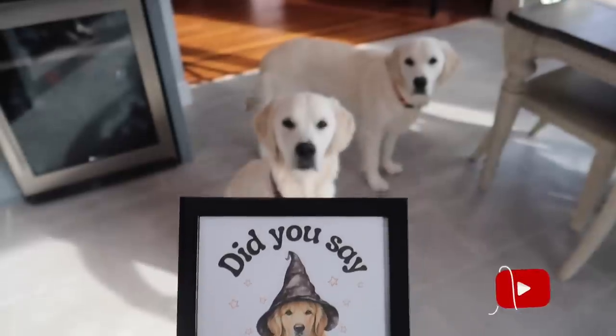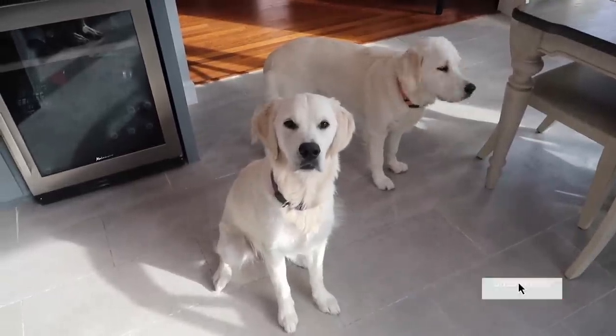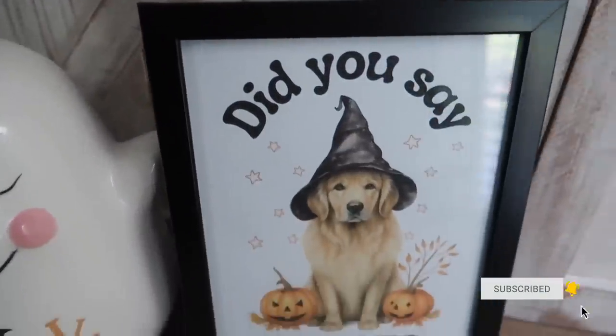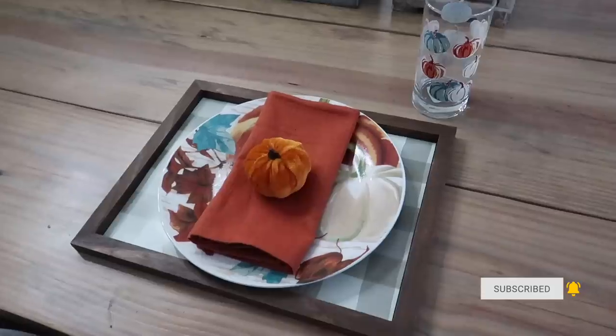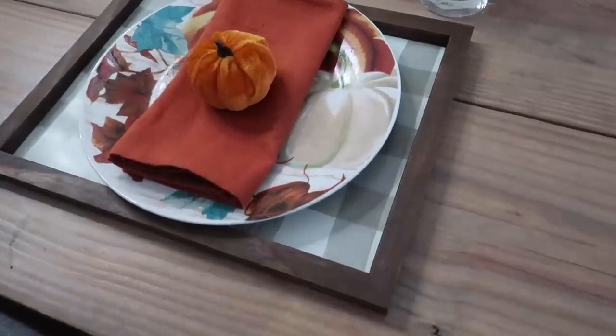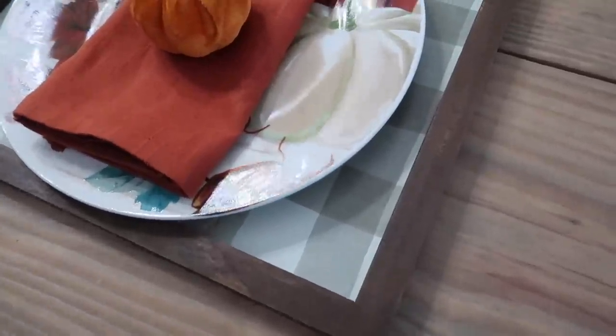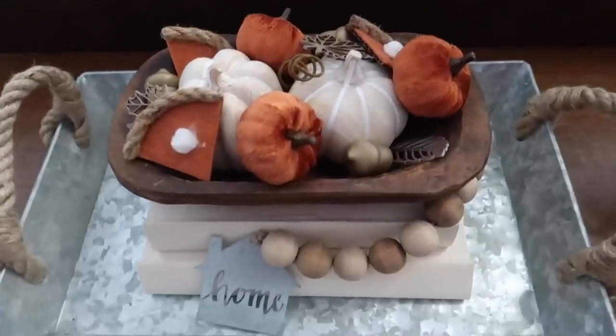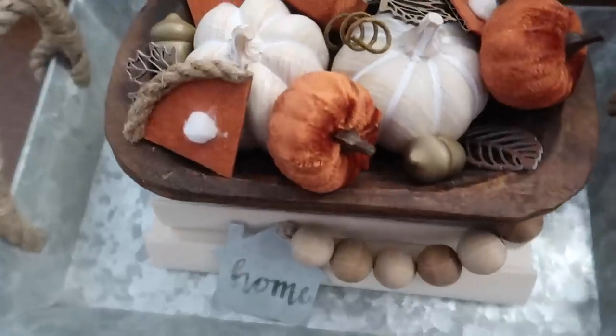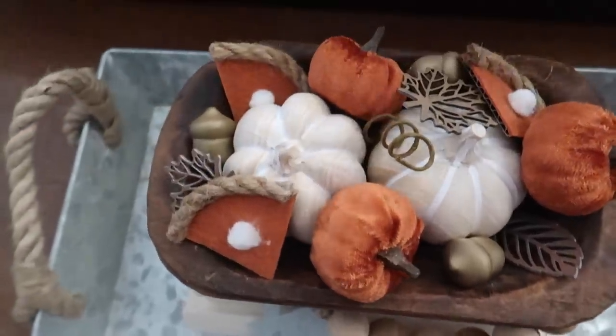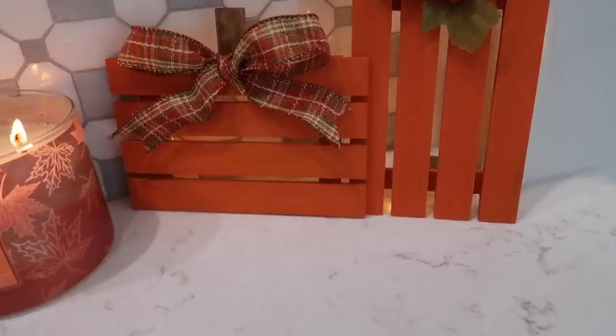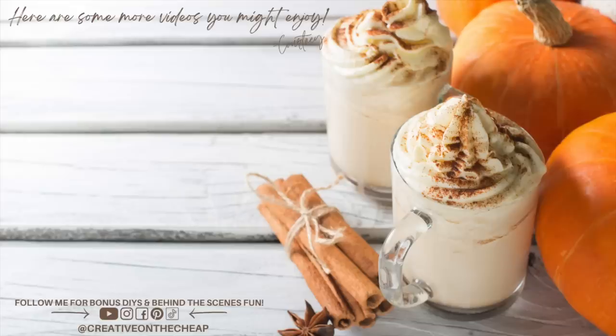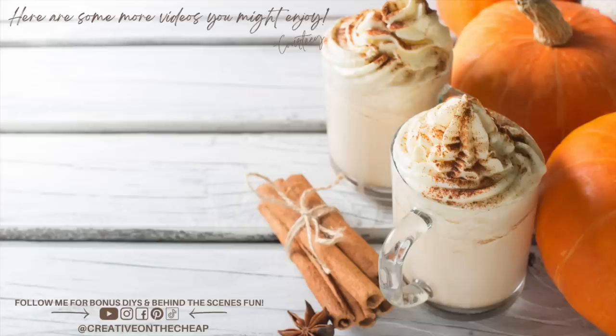That wraps up another round of fall DIYs using Dollar Tree supplies. Let me know down below which one of these projects was your favorite. Also let me know do you have a pet, do you have a dog, a cat, a hamster, a gerbil? I would love to know about your pet and its name. I forgot to mention Design Bundles did have some cat prints so if you want to make a version of the dog picture you could definitely do it for your cat. Thanks so much for watching guys I really do appreciate it. Here are some more videos you might enjoy and I will see you in the next one. Bye!